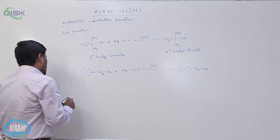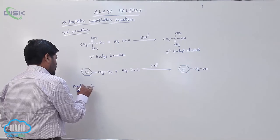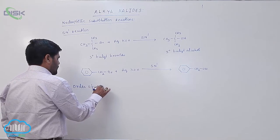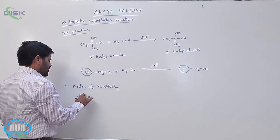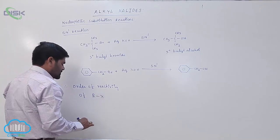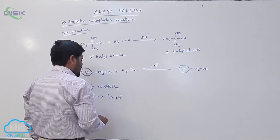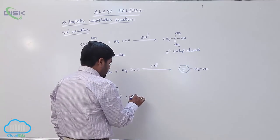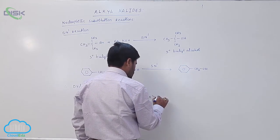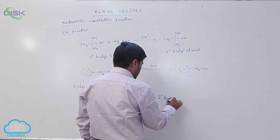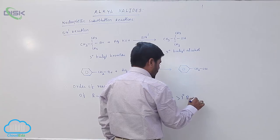Therefore, the order of reactivity of alkyl halides in SN1 reaction is: 3 degree alkyl halide is more reactive than 2 degree alkyl halide, which is more reactive than 1 degree alkyl halide.